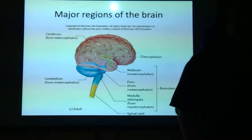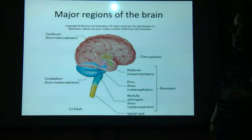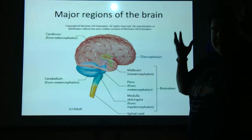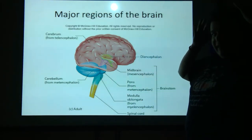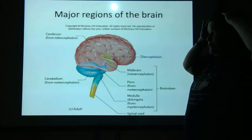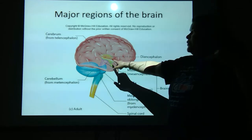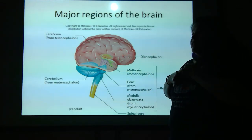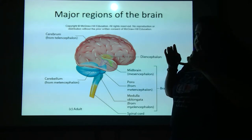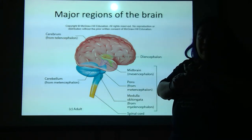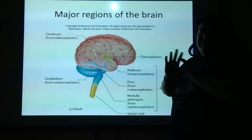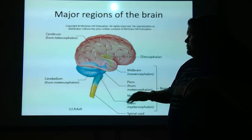The major regions of the brain: you've got the cerebrum in pink — that's the big top of your brain. Dead center in the middle, you have the diencephalon. This includes things like your pituitary gland, your hypothalamus, your thalamus, the epithalamus, and the subthalamus.